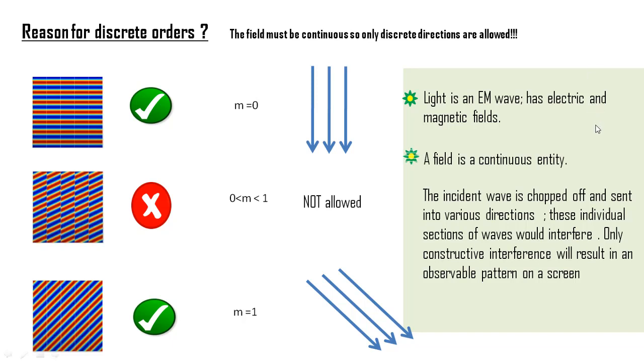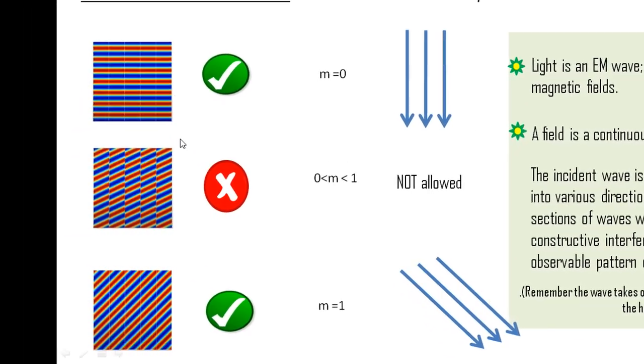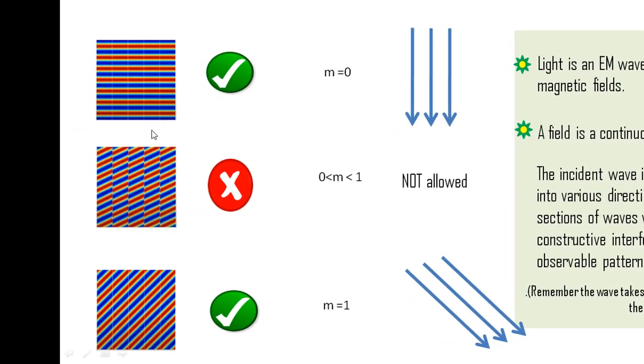A field as we know is a continuous entity. Since we have seen how the incident wave takes on the same period as that of the host, we use these fine lines to indicate the sharp wavefronts. Now in order to see any observable pattern on a screen, these individual fields need to interfere accordingly.